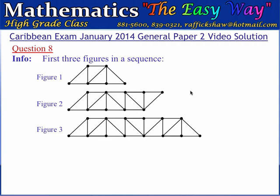In the first figure, we have a trapezium with the parallel sides being one unit long and three units long. There are dots on the parallel sides one unit apart, so in the first figure there are six dots. The trapezium is divided into congruent triangles, and so the first figure has four congruent triangles.